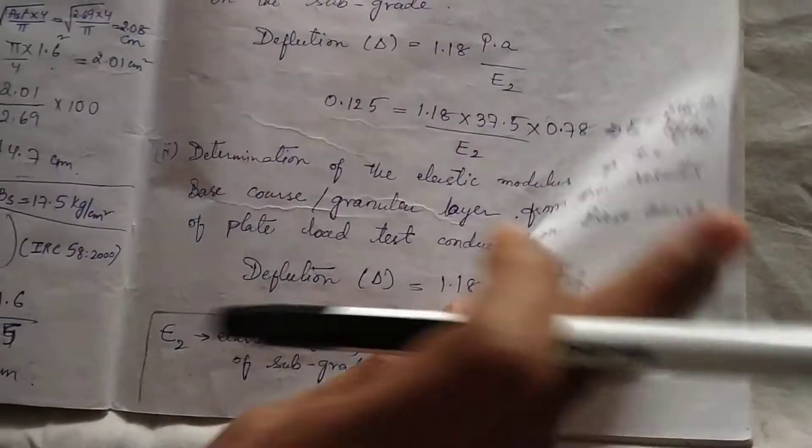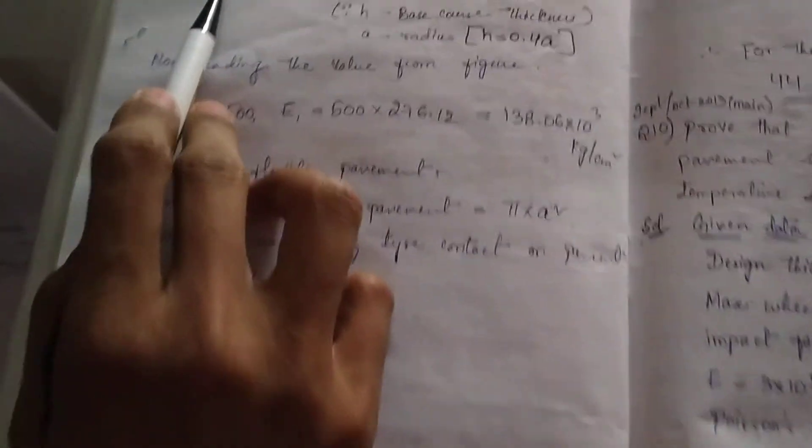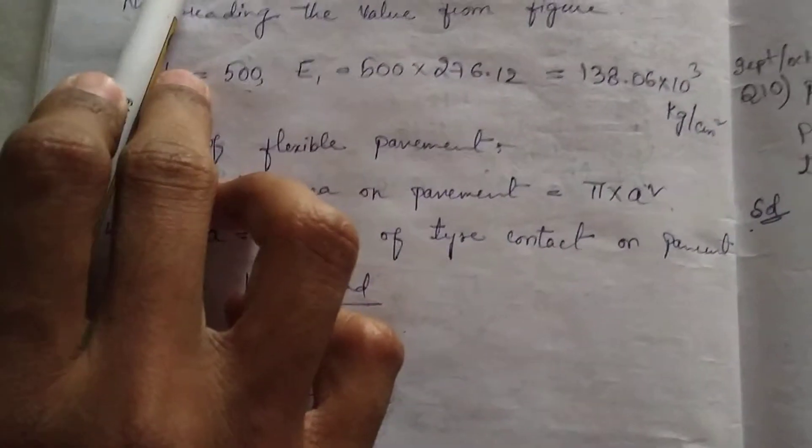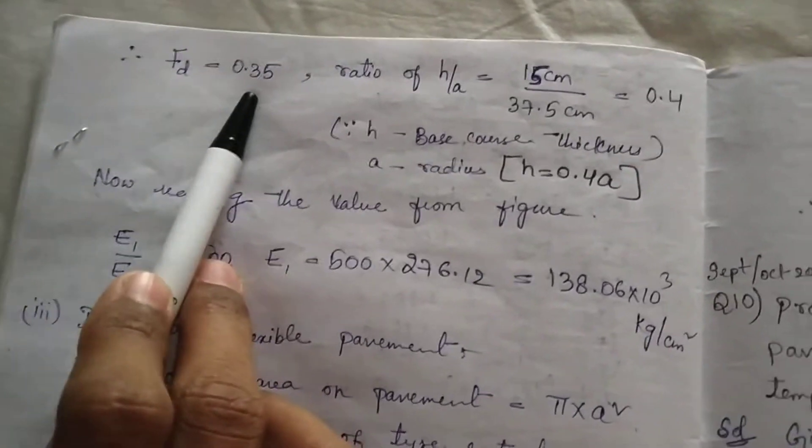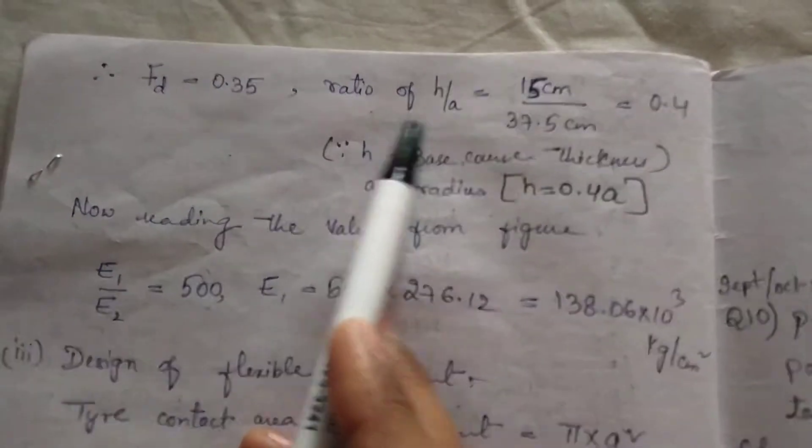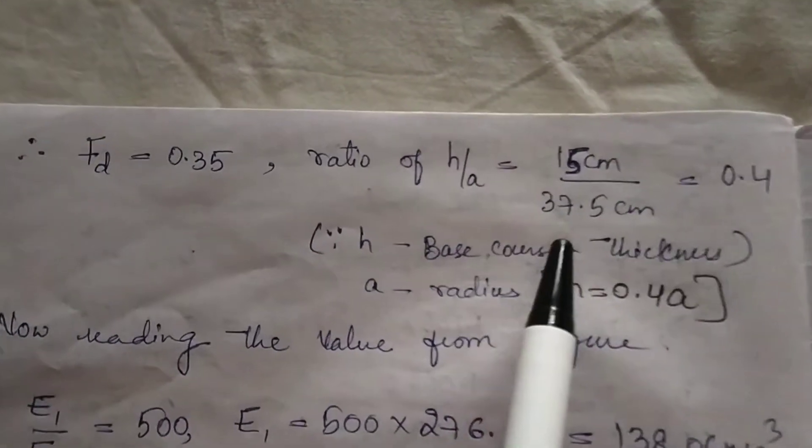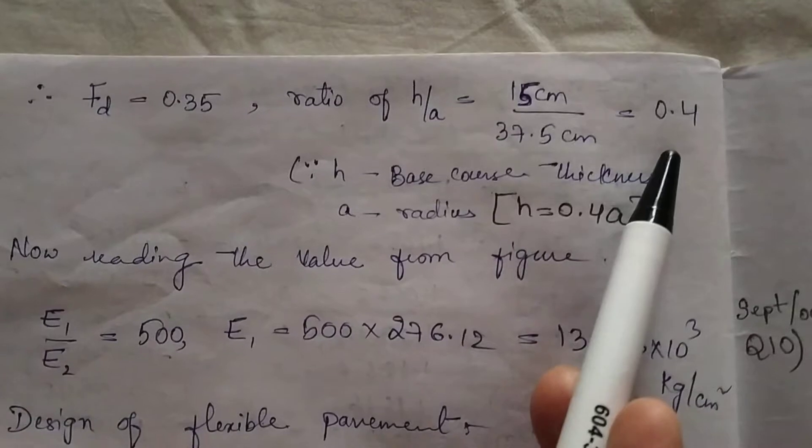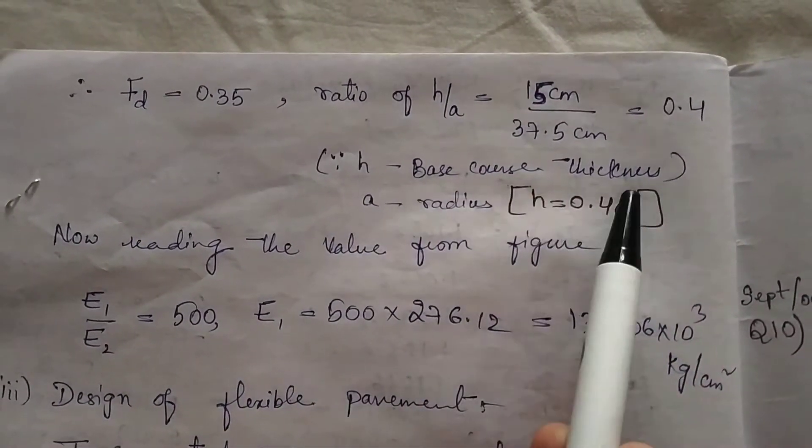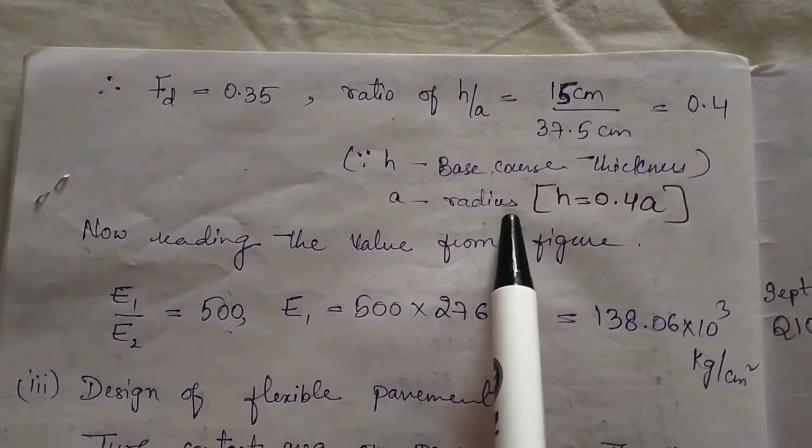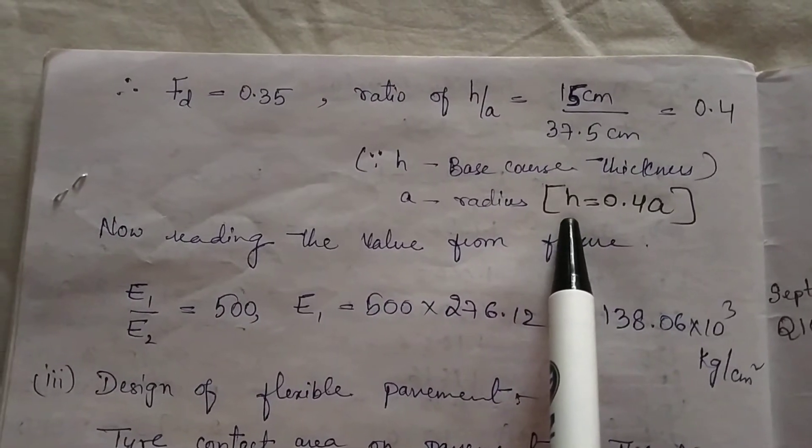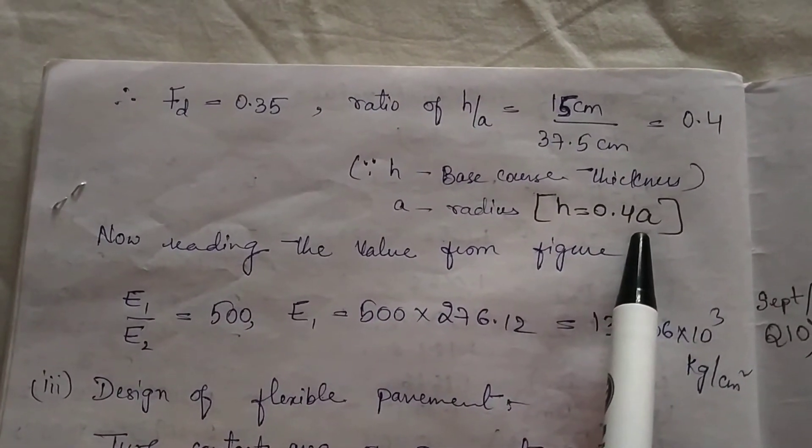After getting this, we will get the value for Ft as 0.35 and ratio of H by A is equal to 15 centimeter by 37.5, which equals 0.4. Here H is base course thickness and A is the radius. We can write H equal to 0.4 A.